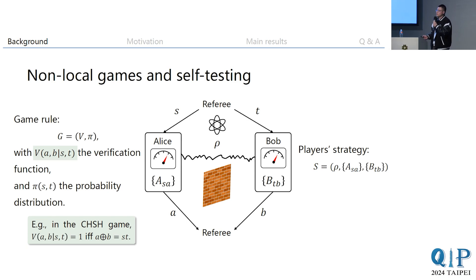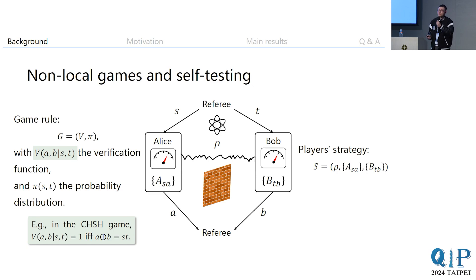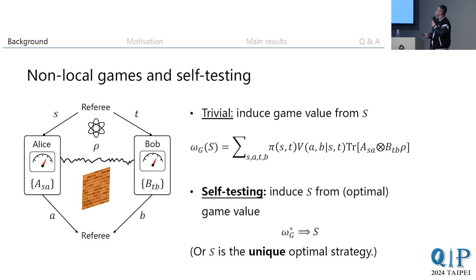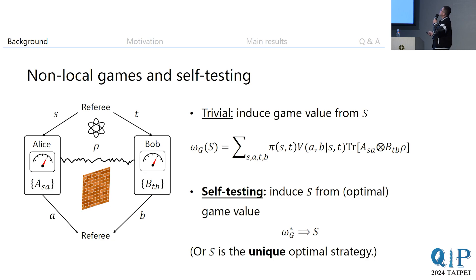On the players' side, since they are not allowed to communicate, their behavior is fully characterized by what we call the player's strategy, which is just the tuple of the state they share and the local measurements performed by Alice and Bob.